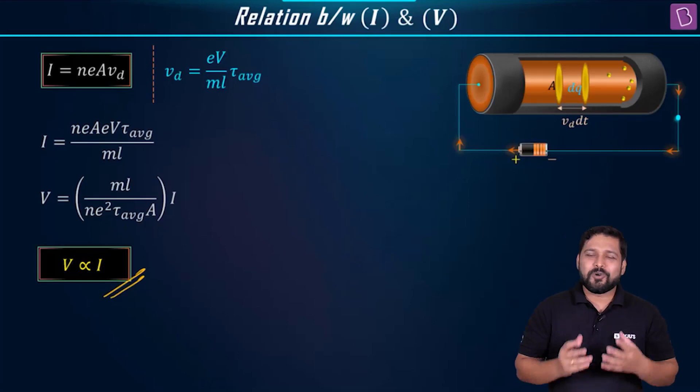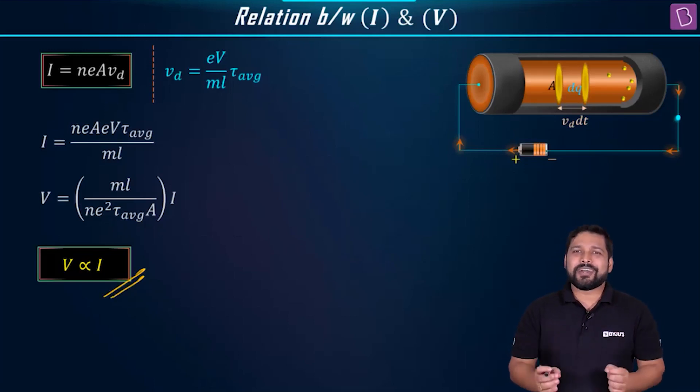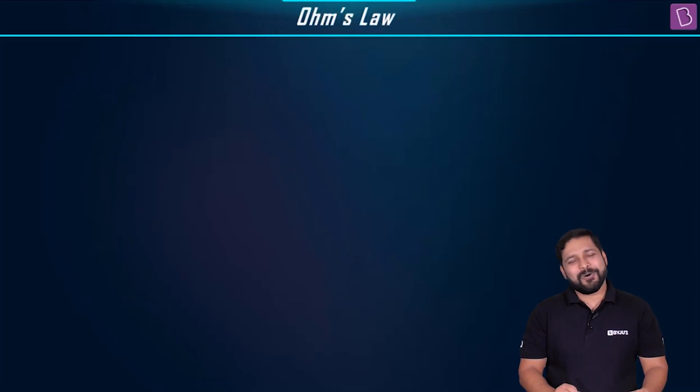More is the potential difference, more will be the value of current. The amount of current flowing through the conductor is directly proportional to the potential difference across the two ends of the conductor. Very simply put, this is called as the Ohm's law.